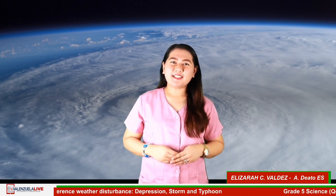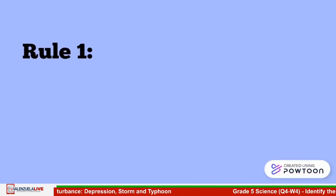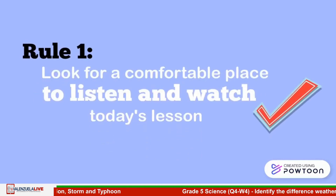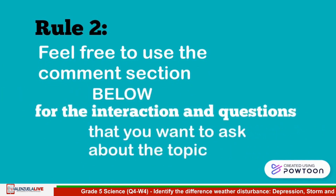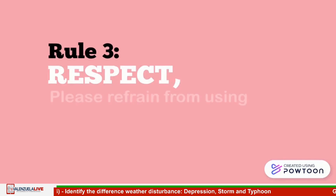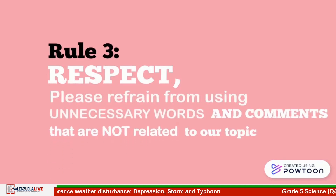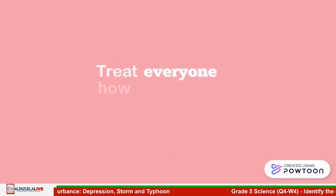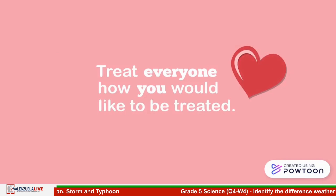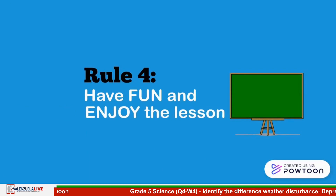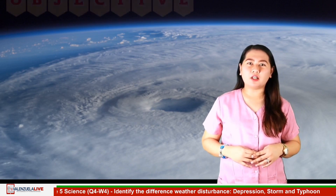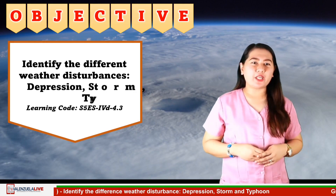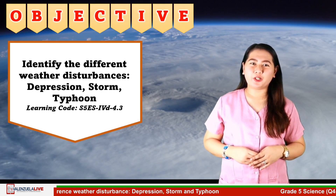Before we start, please take note of the following reminders. This is Week 4 of Quarter 4 in Grade 5 Science, and our objective is to identify the different weather disturbances such as depression, storm, and typhoon.